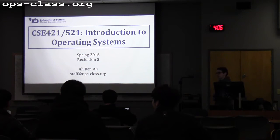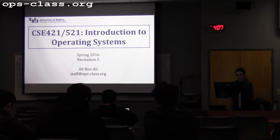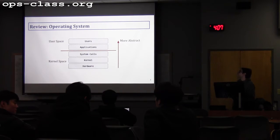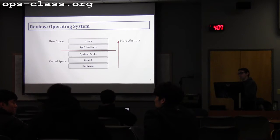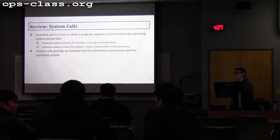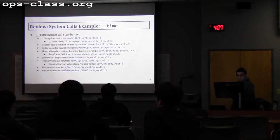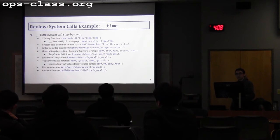Hi everyone. Today is our fifth recitation, and as usual I will be reviewing what we covered last week, since it's important for what we're going to cover this week. We mentioned how the operating system provides abstraction for users and how it enforces boundaries between user space and kernel space — the user space is basically normal mode and the kernel space is the privileged mode. We also mentioned that system calls allow the user program to request services from the operating system, whether hardware or software related. We went through the system call step by step, specifically the time syscall, from when the user makes the syscall to when they receive the results.